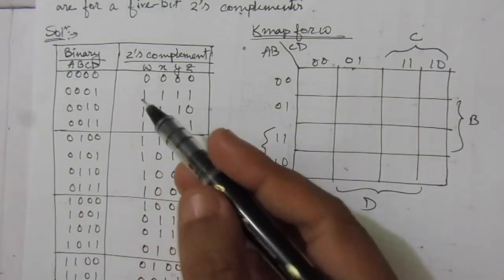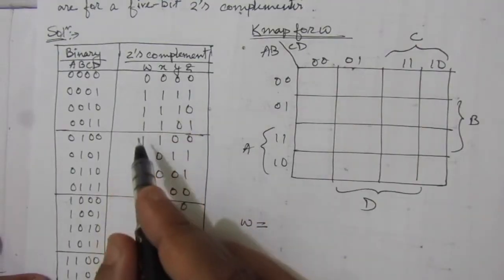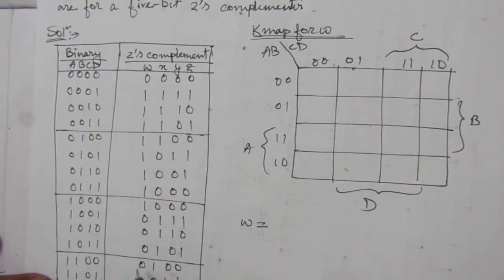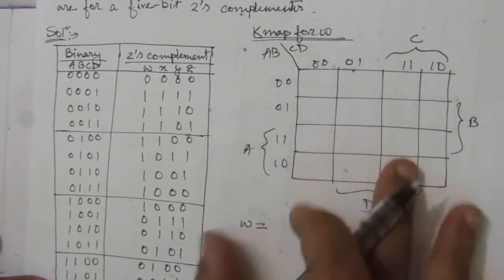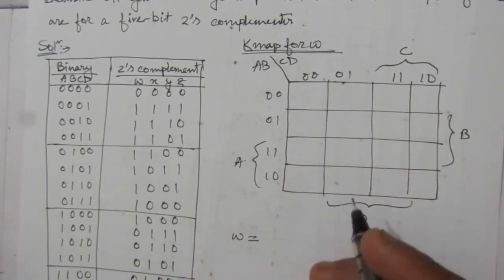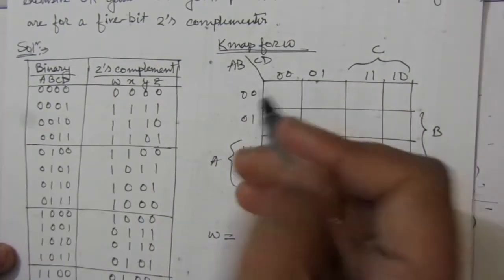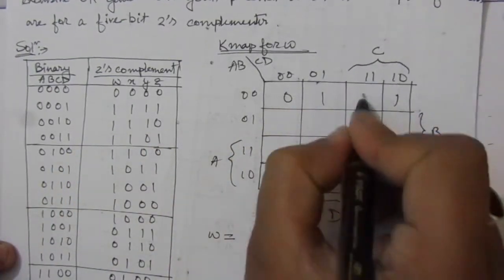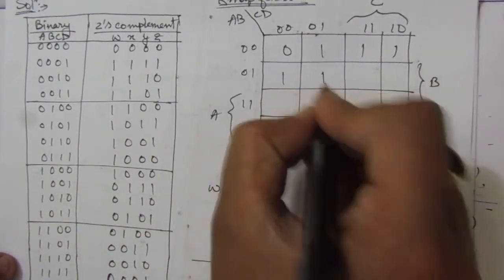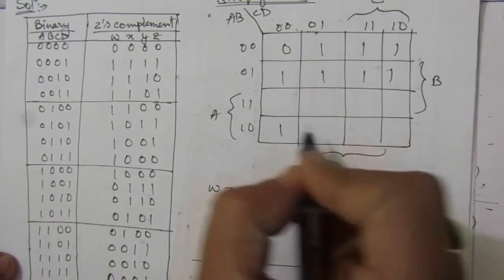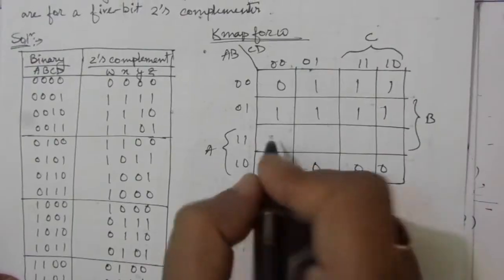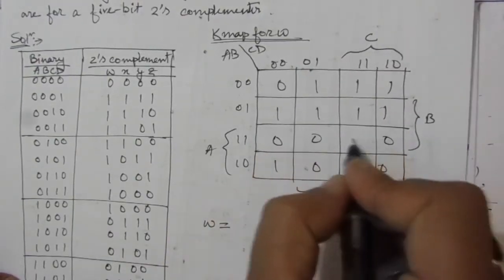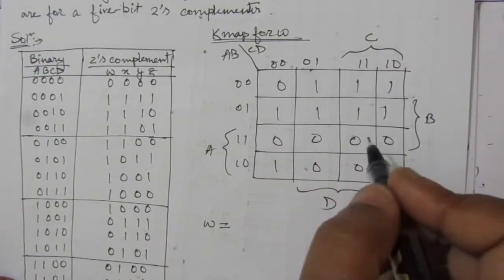For W, we put the values into the Karnaugh map: 0, 1, 1, 1, 1, 1, 1, 1, 1, 0, 0, 0, 0. This is the KMap for W. Now we have to take the possible groupings.